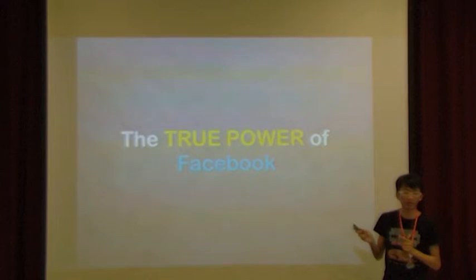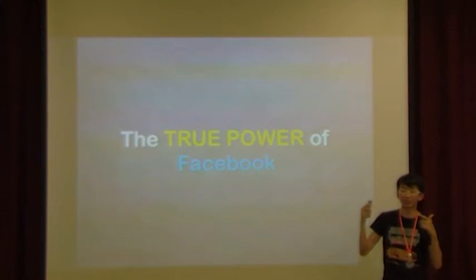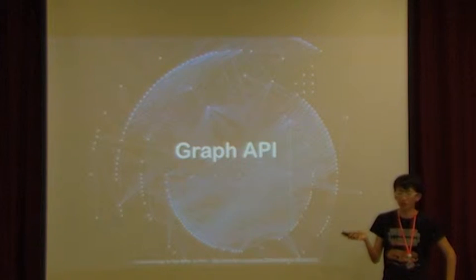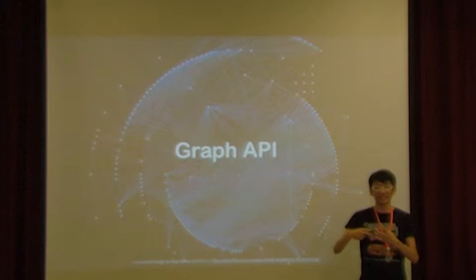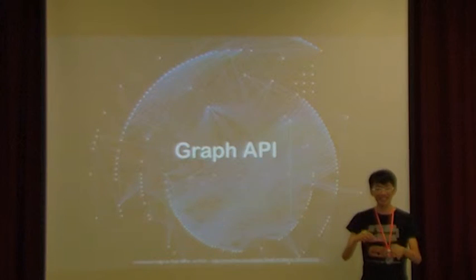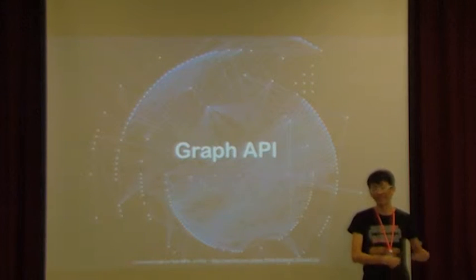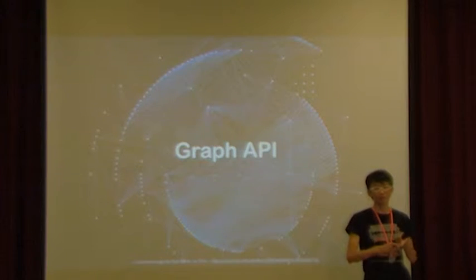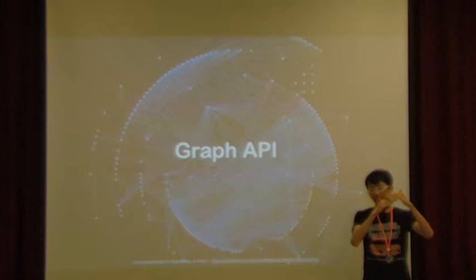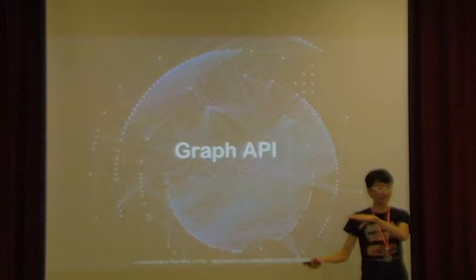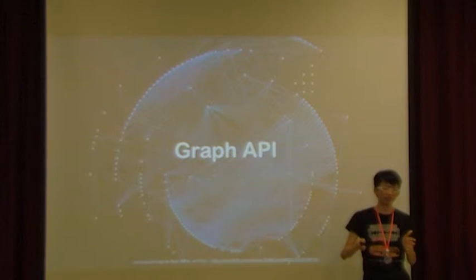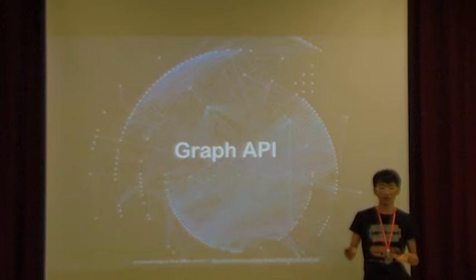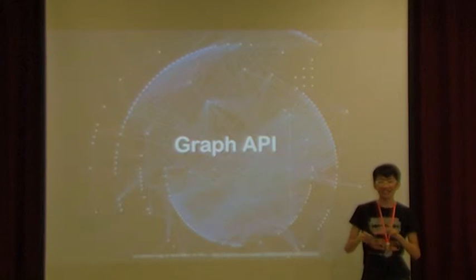This is where the true power of Facebook lies for developers — the Graph API. What the Graph API allows you to do is: if you've developed an app and the user grants you permission, it allows your app to dig through their private data. You can know who is logging into your app, access their photo album, check their likes and dislikes — whatever information was posted on Facebook, you can access it as long as the user grants permission. Imagine the possibilities.